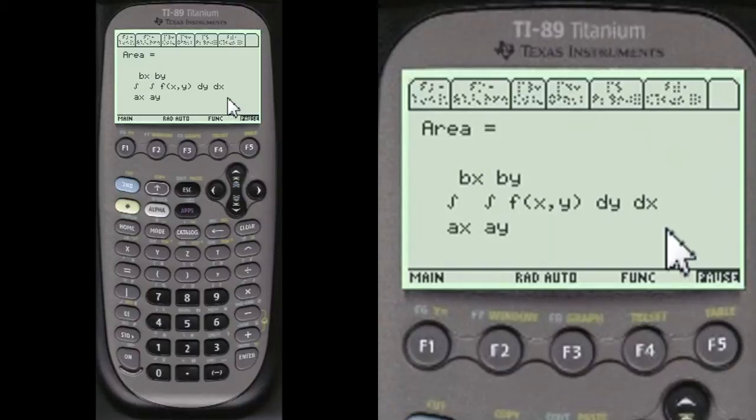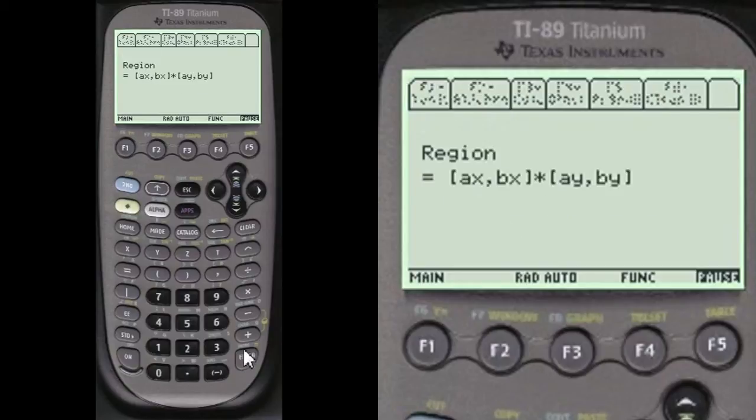And here we have, if dx is on the outside, then it's on the outside here. And this is on the inside, therefore the a y, b y, the limits are involved with the dy inside. So remember that the dx is on the outside, therefore these go with the dx. Dy is on the inside. The limits of integration go from a y to b y. So let's enter those now.